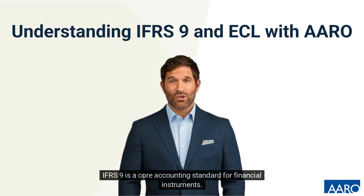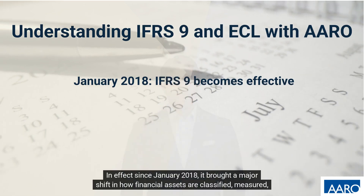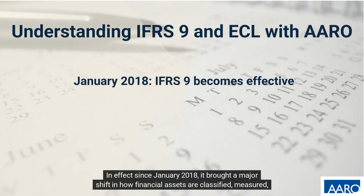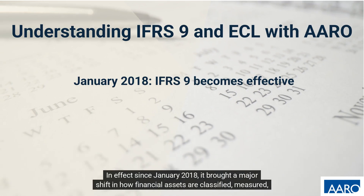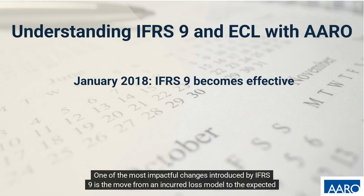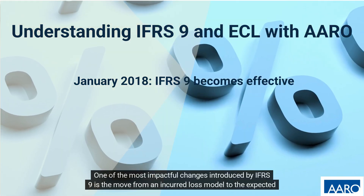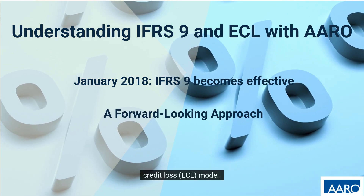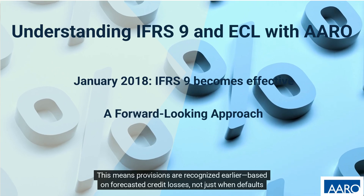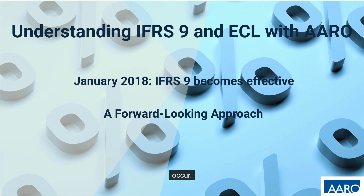IFRS 9 is a core accounting standard for financial instruments. In effect since January 2018, it brought a major shift in how financial assets are classified, measured, and impaired. One of the most impactful changes introduced by IFRS 9 is the move from an incurred loss model to the expected credit loss model. This means provisions are recognised earlier, based on forecasted credit losses, not just when defaults occur.